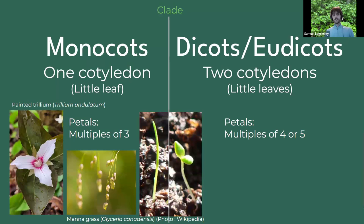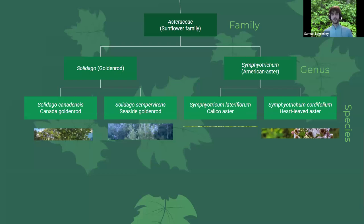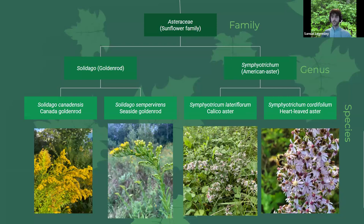Monocots and dicots are the flowering plants that make one or two little seed leaves — cotyledons — which makes the words monocot and dicot. The petals of monocots generally have multiples of three, while dicots generally have multiples of four or five. These are the middle classifications in the ranking system. But at the very bottom, you have the family, the genus, and the species — I think these are the most important that we're going to look at today.